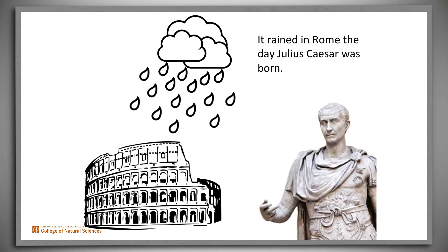For example, consider the claim that it rained in Rome on the day when Julius Caesar was born. It either did or did not rain. But since scholars are not even certain of when Caesar was born, and detailed weather data don't go back that far, we are unlikely ever to know which.